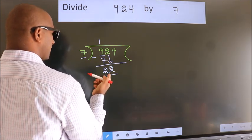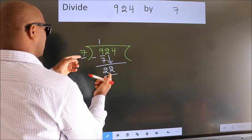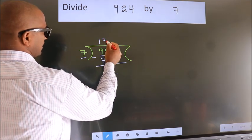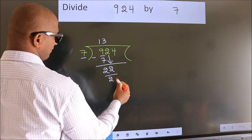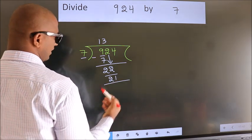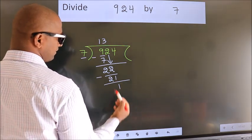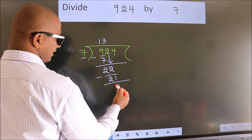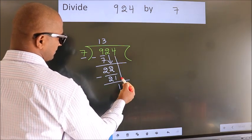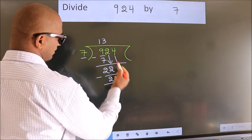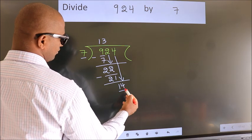A number close to 22 in the 7 table is 7 threes, which is 21. Now we subtract — we get 1. After this, bring down the beside number. So 4 down, giving us 14.